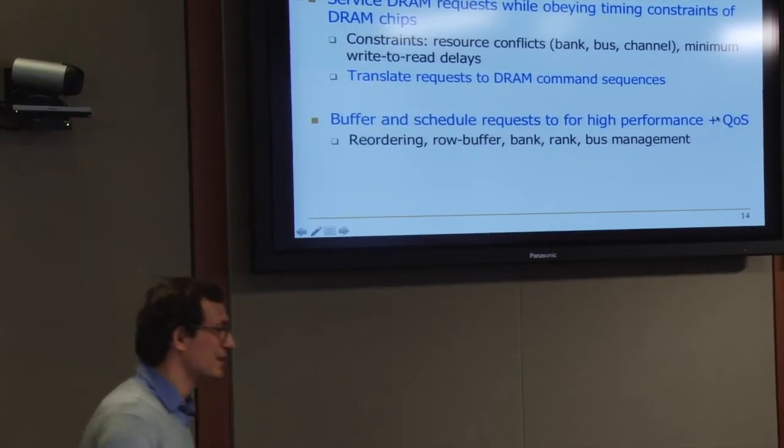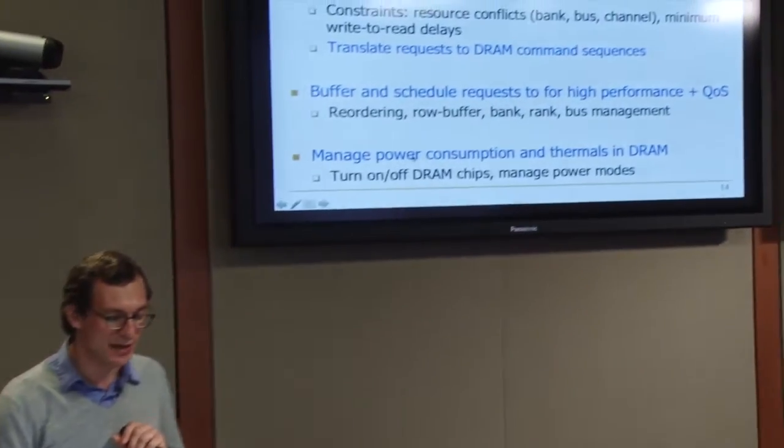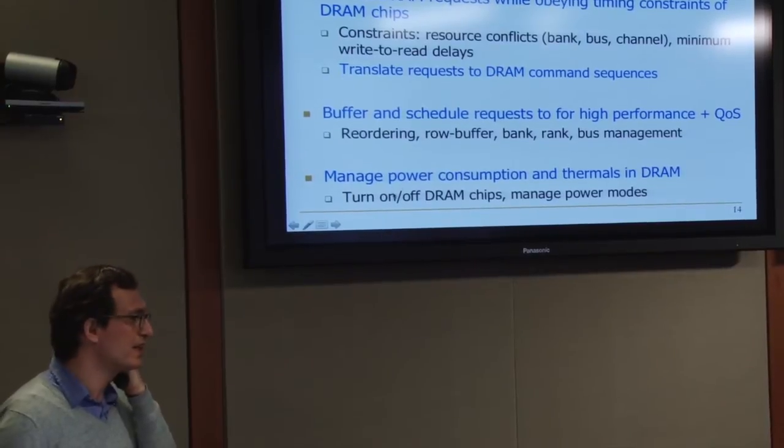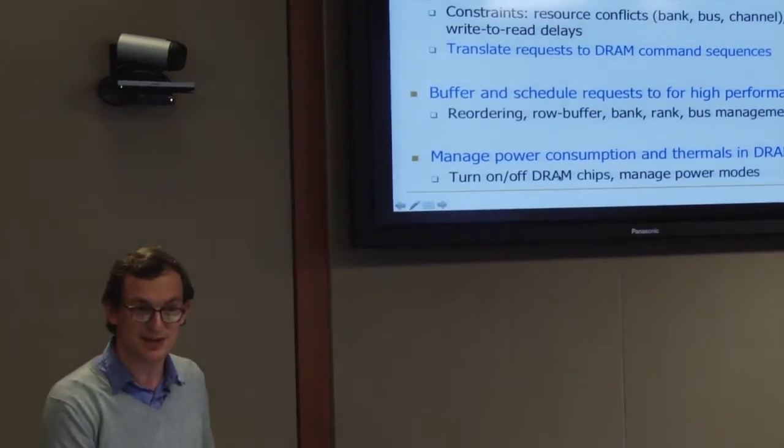The third thing is to optimize for performance: buffer and schedule requests for high performance plus quality of service. You need to have buffers, do reordering, and take into account the status of different DRAM parts — row buffer, bank, rank, bus. We will focus on quality of service and interference management a lot. If there are multiple sources sending requests, you need to manage them such that you get high overall system performance. If you have a CPU and GPU sharing a memory controller, you don't want to always be servicing only the GPU — that's a real problem today. Finally, the controller needs to manage power consumption and thermals in DRAM — it can turn on or off DRAM chips and manage different power modes.